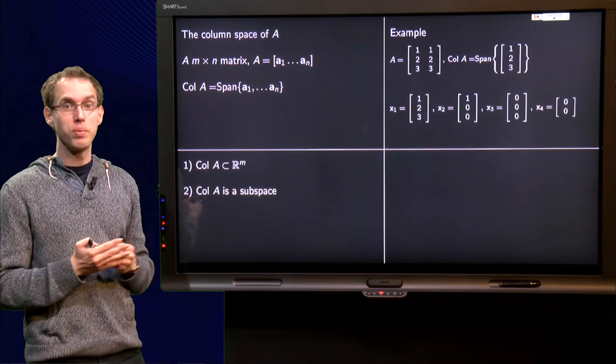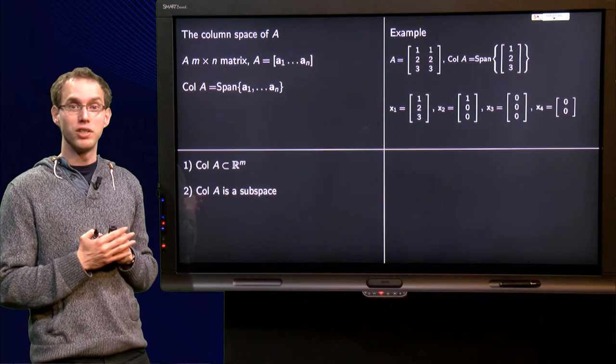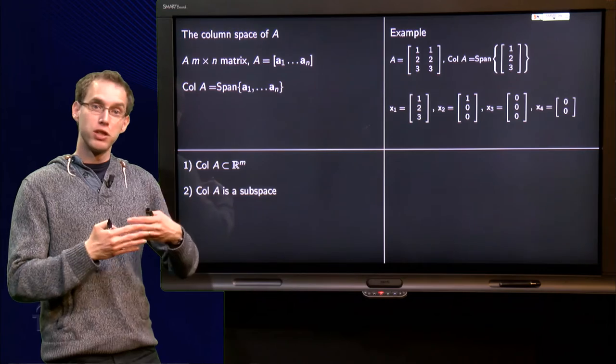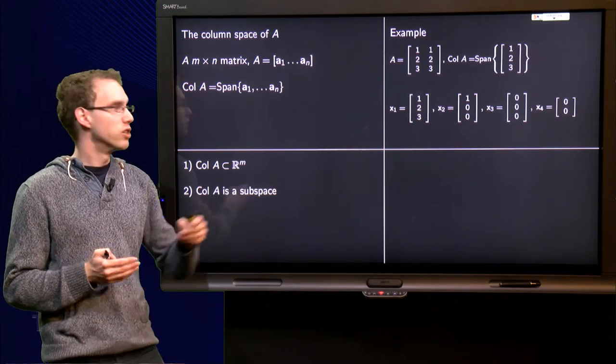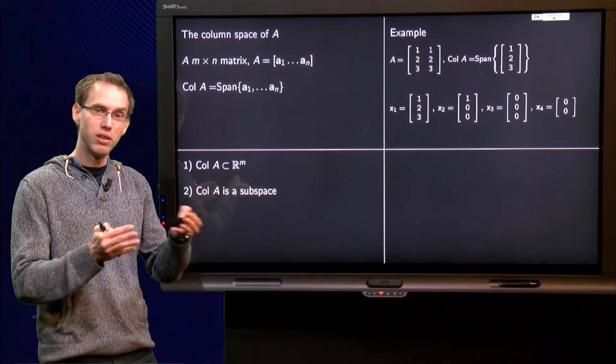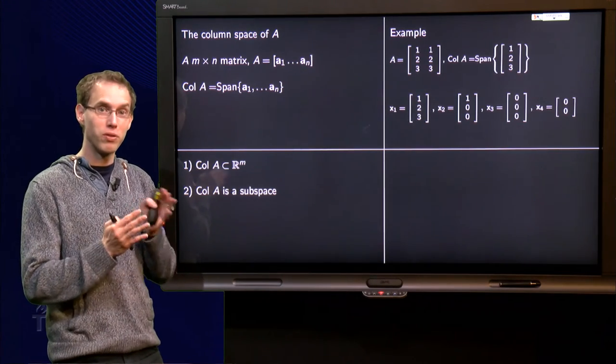Then the column space of A is the span of its columns, so the span of [1, 2, 3] and [1, 2, 3]. Well, the span of [1, 2, 3] and [1, 2, 3] is just the span of [1, 2, 3]. Because we are allowed to take all linear combinations, we need only one vector.